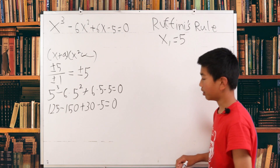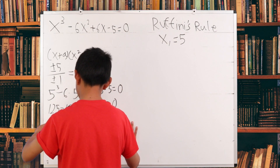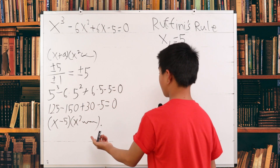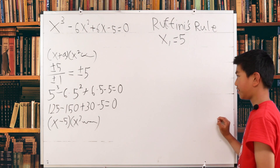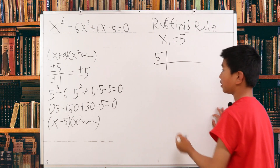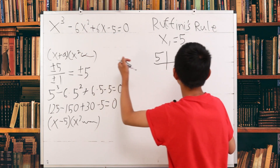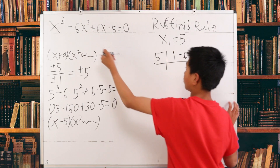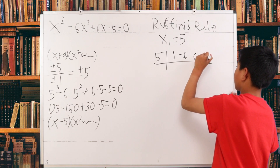Now we use Ruffini's rule. Since we proved that a is 5, we can write the original equation as x minus 5 times some quadratic. We need to find that quadratic. We plug in the root 5 and put in all the coefficients: the first coefficient is 1 (from x cubed), the second is negative 6 (from negative 6x squared), the third is positive 6, and the last is negative 5.